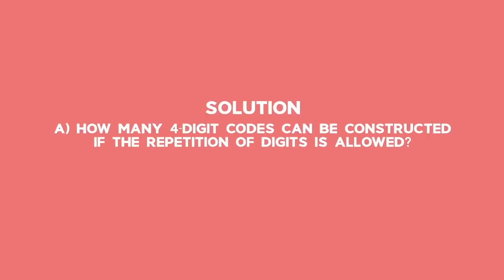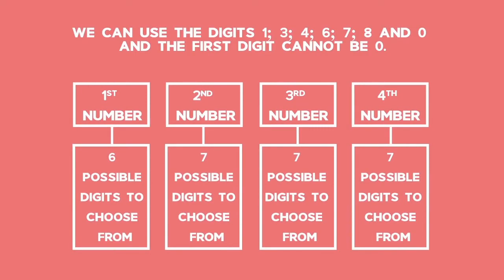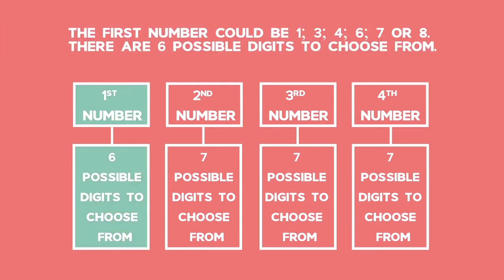Question A asks how many four-digit codes can be constructed if the repetition of the digits is allowed. We can use the digits 1, 3, 4, 6, 7, 8 and 0, and the first digit cannot be 0. The first possible digit could be 1, 3, 4, 6, 7 or 8 — there are six possible digits to choose from.